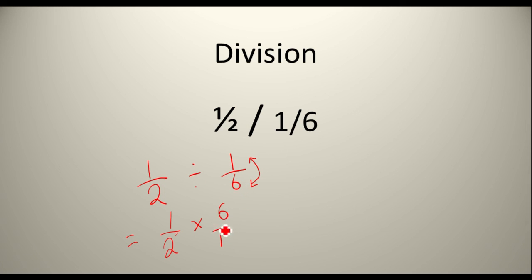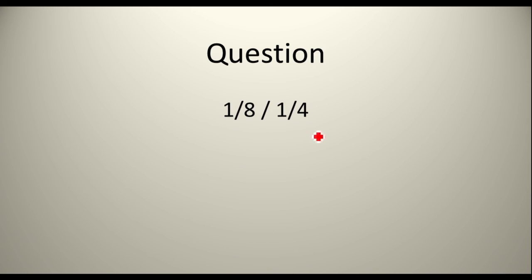Because when you're dividing, you always flip this fraction, not this fraction, always this fraction over. So, we get a half times 6 over 1, which equals 3. That is your answer. Or, you could have 3 over 1, but it's best that you leave that at 3. Here's a question. Make sure you do it, otherwise I will disown you. I'm only joking. But make sure you do this question.